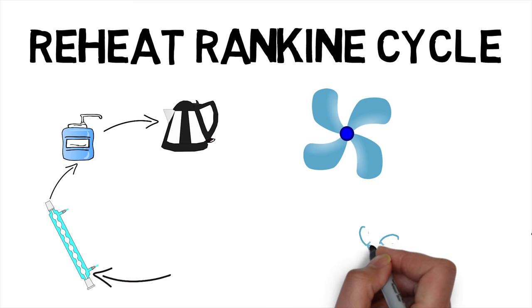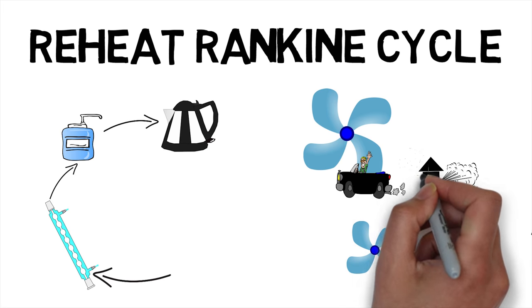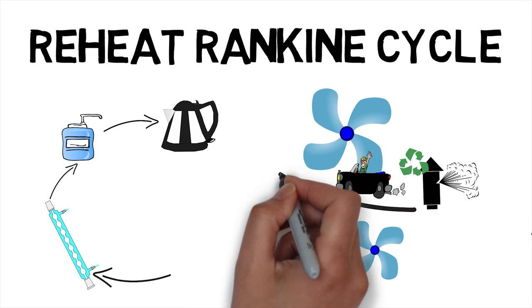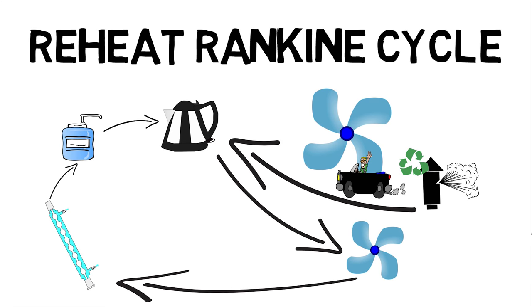In a reheat Rankine cycle, a low pressure turbine is added to the mixture and the steam from the exhaust of high pressure turbine is recycled into the boiler and sent to the intake of low pressure turbine, which then generates power.